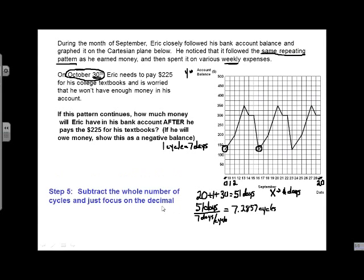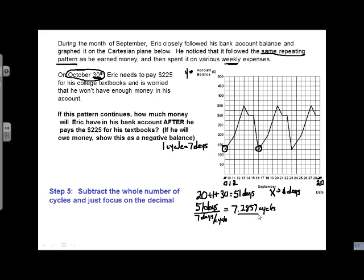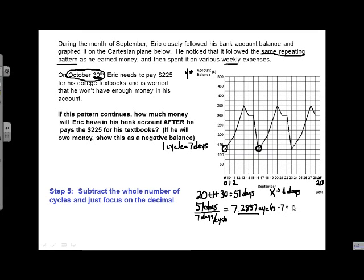Alright, step 5. Subtract the whole number of cycles and just focus on the decimal. So if we're exactly 7 cycles in, it would be easy. We'd be right at the start. The question is, how far in, or how many days in, is .2857 cycles? So we're going to subtract the 7, and that just gives us the .2857. So that's what we're most concerned with here.